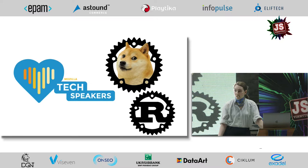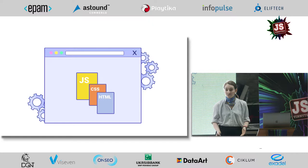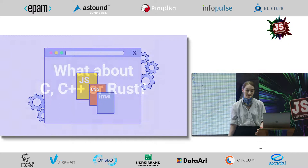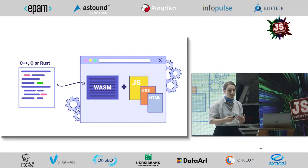Chances are you've already come across WebAssembly and you weren't even aware. I'll show you some cool examples and some practical ones. In every browser — whether you use Chrome, Firefox, or Safari — code is interpreted and executed by a JavaScript engine, which, until recently, used to run only JavaScript. But what about C, C++, or Rust? JavaScript is just not ideal for every task we want to perform. That's where WebAssembly steps in.